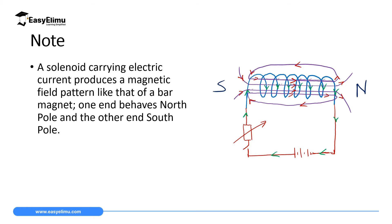On screen we have a battery supplying direct current, a switch, and a resistor. Current flows from the positive terminal. On the solenoid, in the front part it moves down and in the back part it moves up — front down, back up — completing the circuit like that.